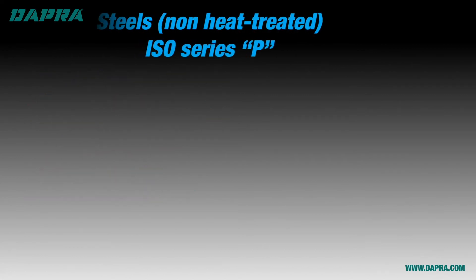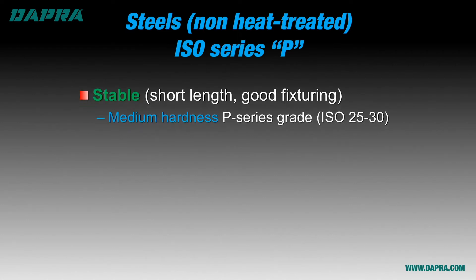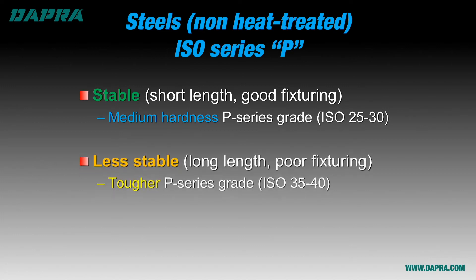For steels that have not been heat treated, or ISO series P, a good medium hardness carbide grade will work very well due to its combination of wear resistance and good toughness. The exception would be if the application is unstable due to a long cutting tool, poor fixturing, or some other reason. If you expect or are encountering chatter or vibration, choosing a tougher grade of carbide for protection against chipping or breakage is the way to go. Remember, softer steels can be machined with a softer or tougher grade of carbide.